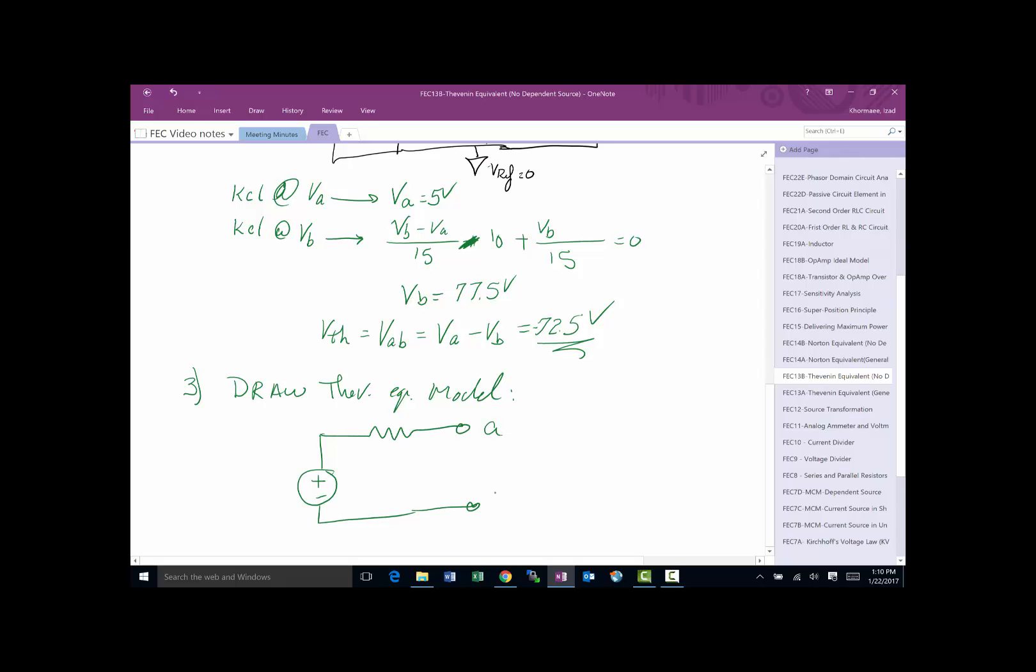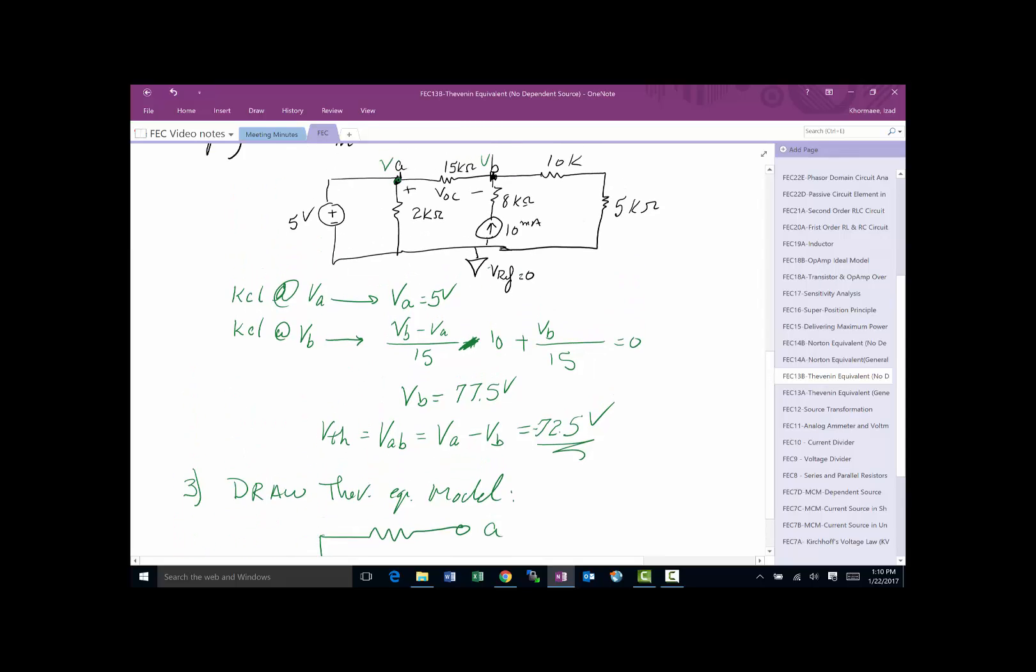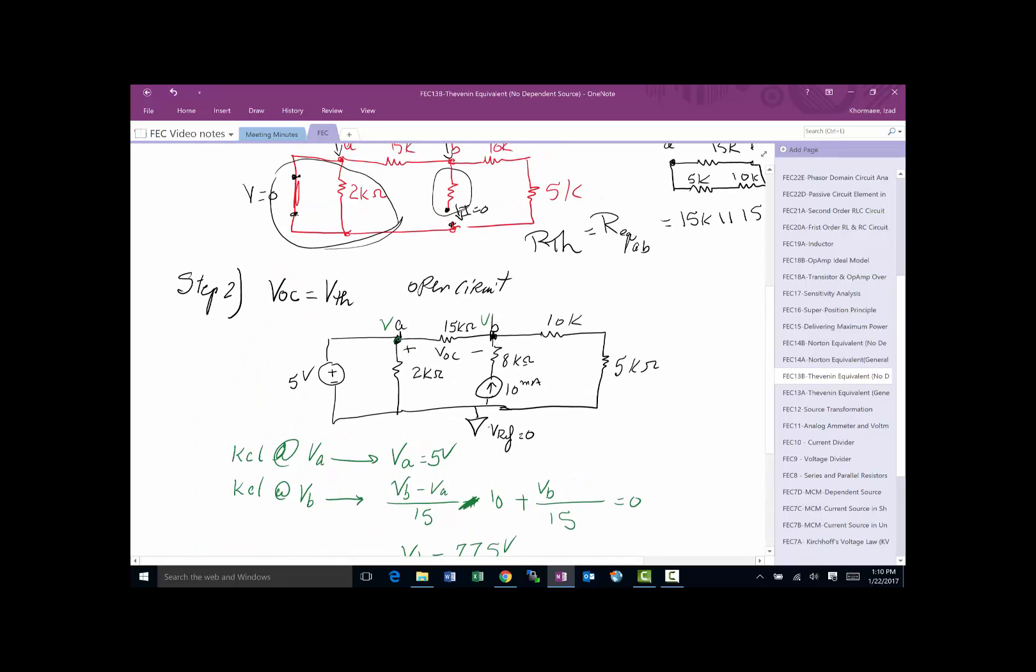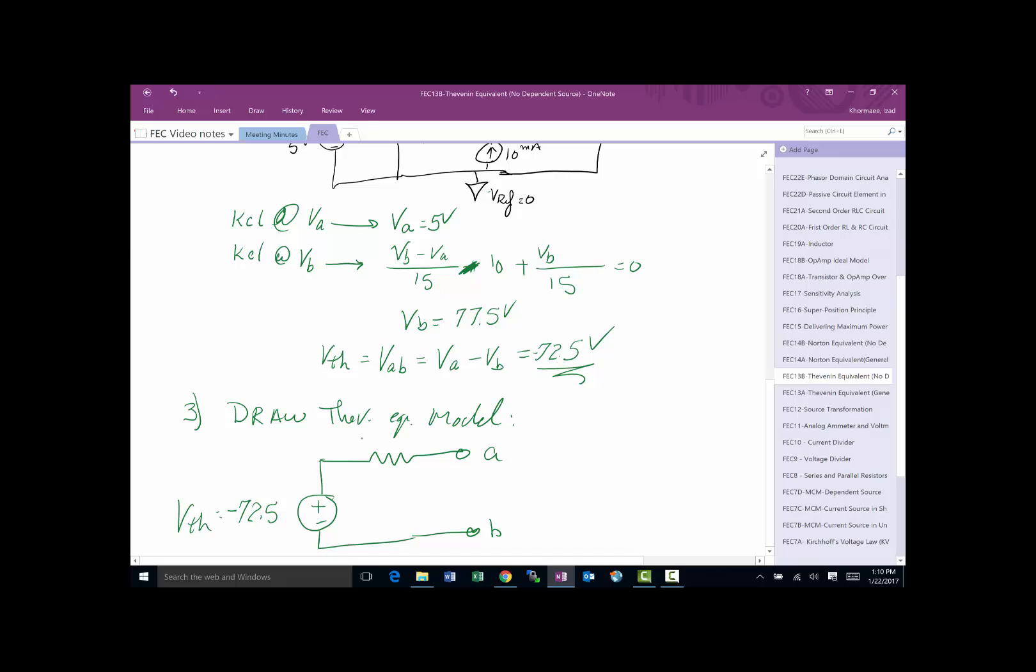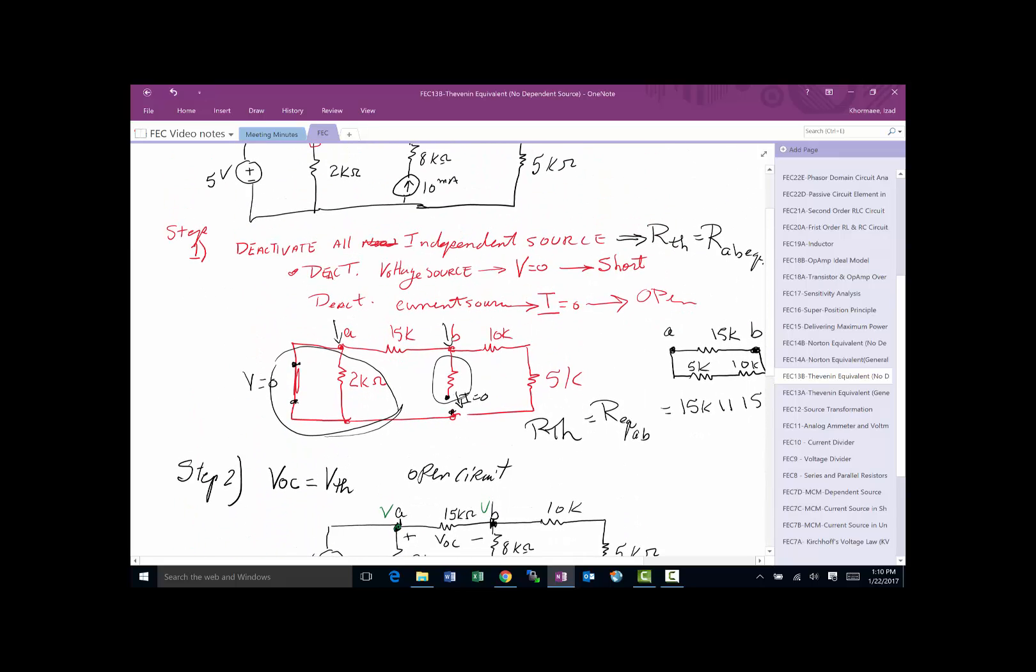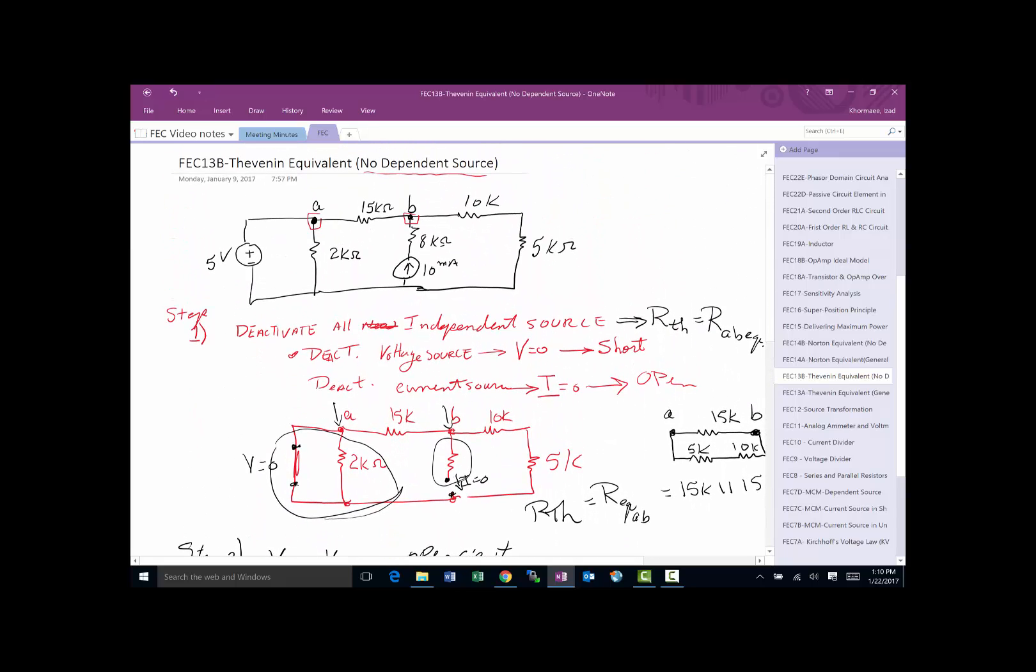So now I can replace that circuit with respect to AB with this thing which is minus 72 and a half for the V Thevenin and I have an R Thevenin which I found earlier here, seven and a half, seven and a half kilo ohm and I'm done.